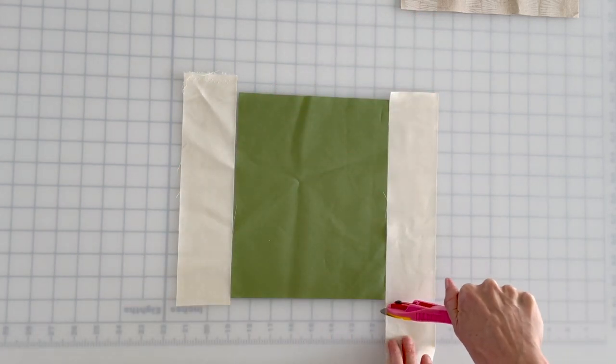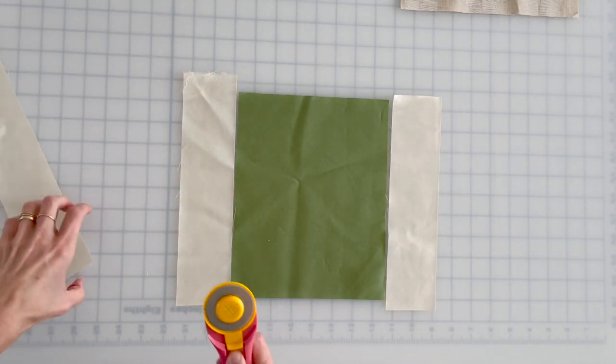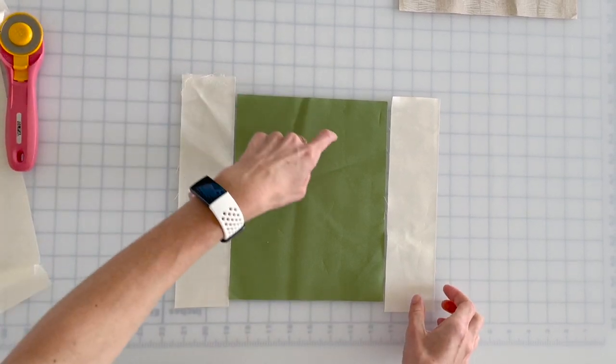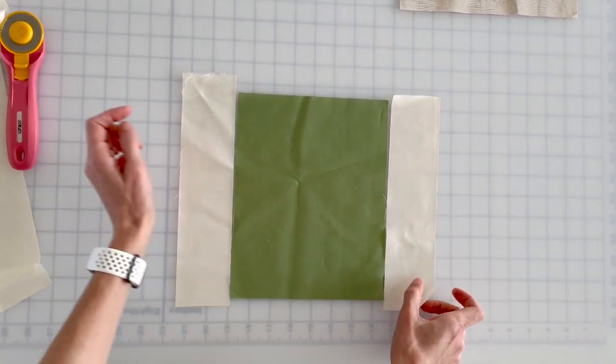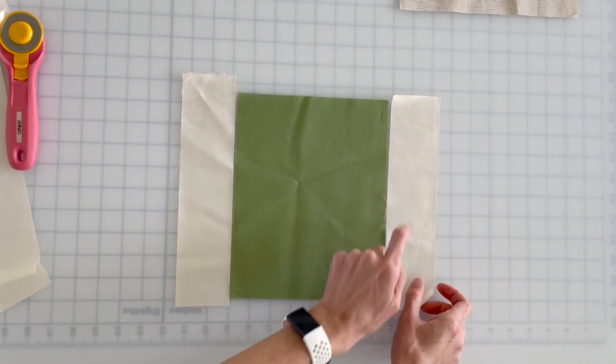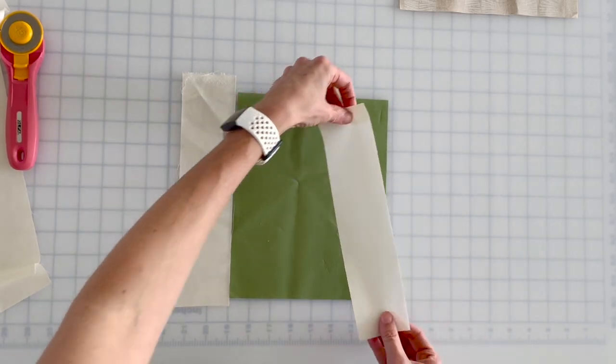And just like that trim it, and so now I have two strips that are just a little bit taller on each side than my center square. If this wasn't a solid, if it was a print, I would make sure that I would place right sides together. Because it's a solid, it's actually reversible, so it doesn't matter.